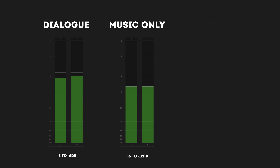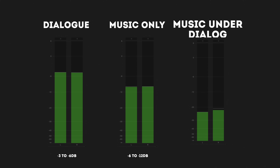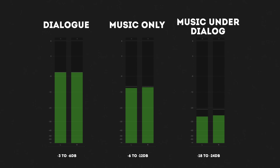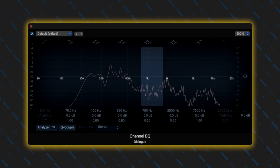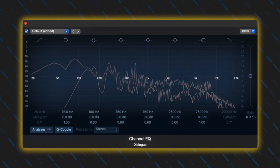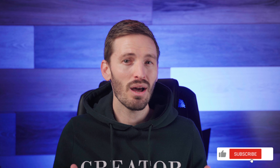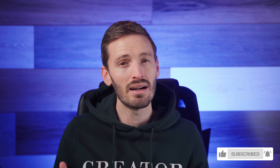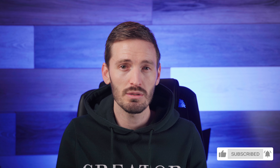I usually keep dialogue between minus 3 dB and minus 6 dB. Music on its own with nothing underneath would be between minus 6 and minus 12 dB, and music under dialogue I'd generally put anywhere between minus 18 to minus 24 dB depending on the type of music. I also sometimes EQ out certain frequencies to make dialogue stand out — I did a video on that which I'll link below. For sound effects, if it complements something on screen but isn't the main focus, I want it loud enough to be heard but not overpowering. If the sound effect accompanies what I want the viewer to focus on, I'll make it louder.